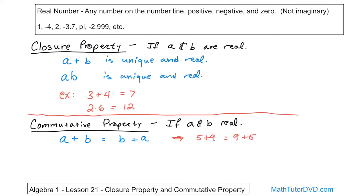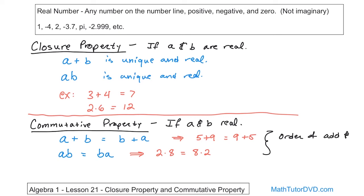Here is the commutative property for multiplication: A times B gives you the same answer as B times A. An example would be 2 times 8, which gives you 16 — the exact same answer as 8 times 2. It falls under the commutative property because for both of these operations — addition and multiplication — the order does not matter.